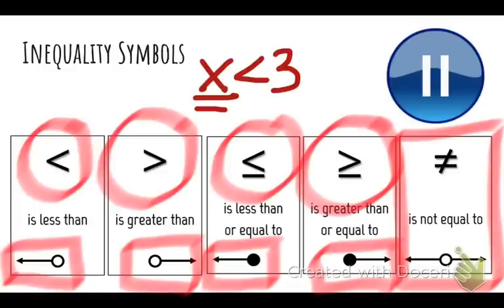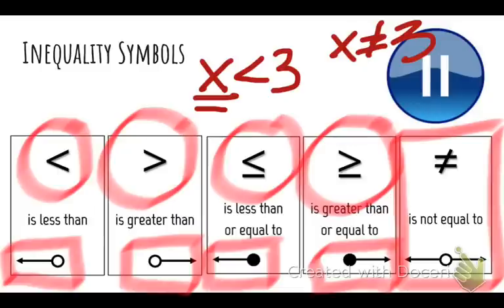If you were to graph 'not equal to,' you're basically saying that every solution is a possible solution to your inequality except the one particular value listed. So if your inequality was x is not equal to 3, a possible graph could look something similar to that. That's a quick walkthrough of all five inequality symbols.